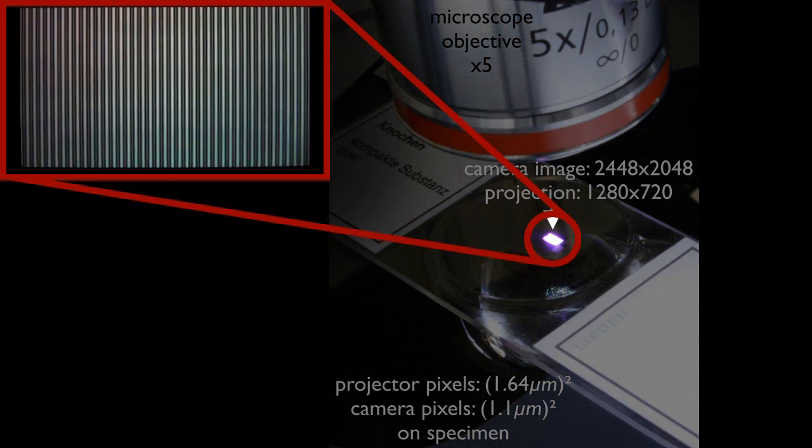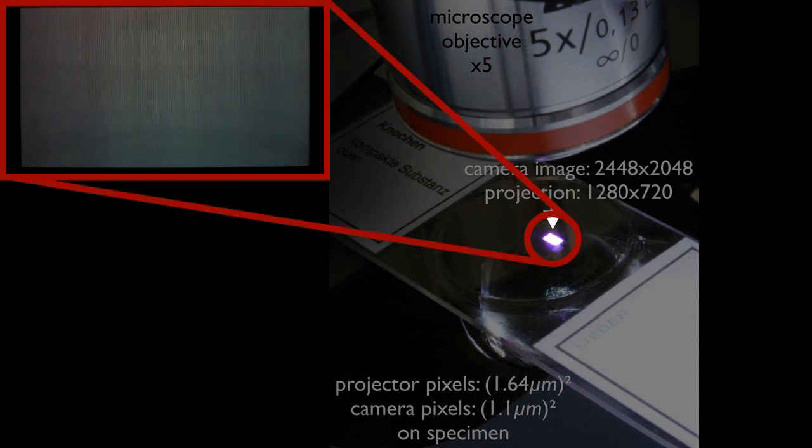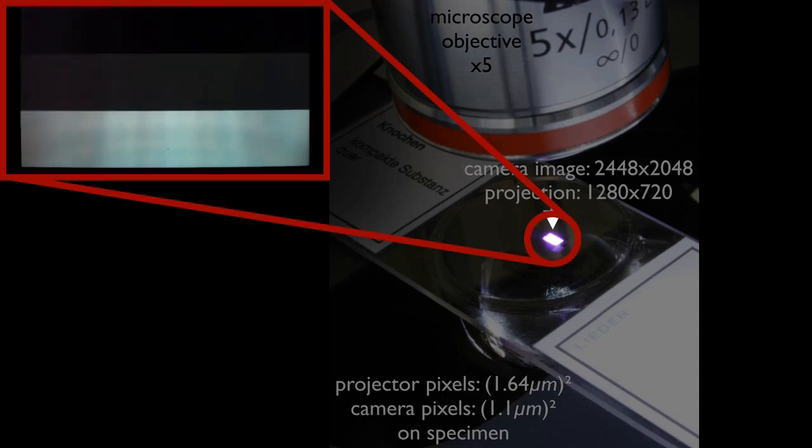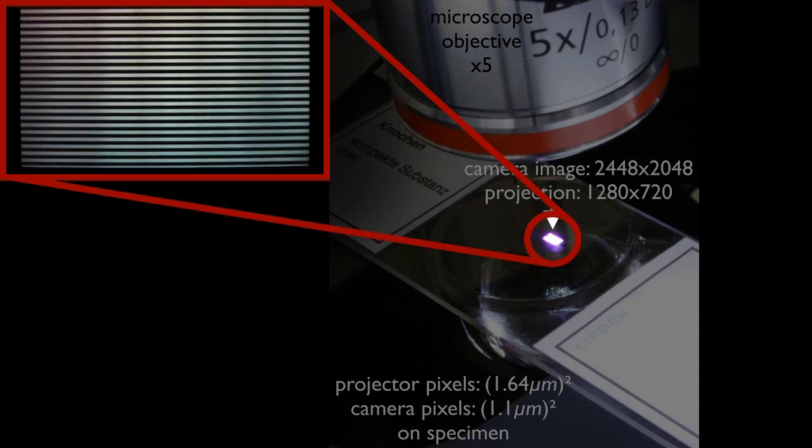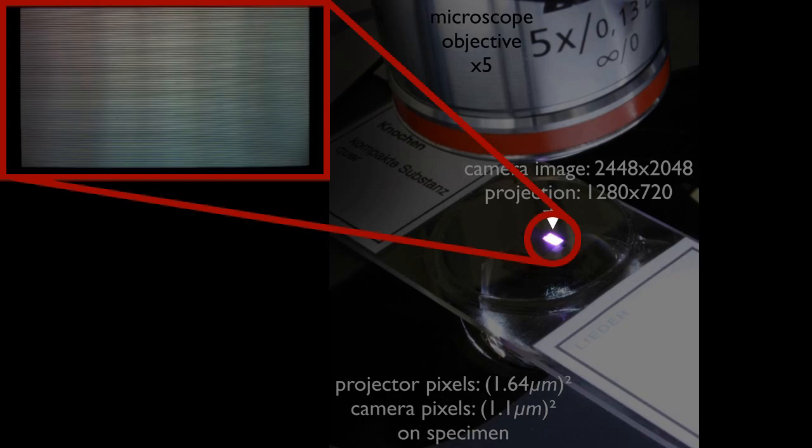For reflected illumination, this is carried out once on a front surface mirror. For transmitted illumination, it currently has to be repeated every time the specimen is moved or the microscope parameters are changed.